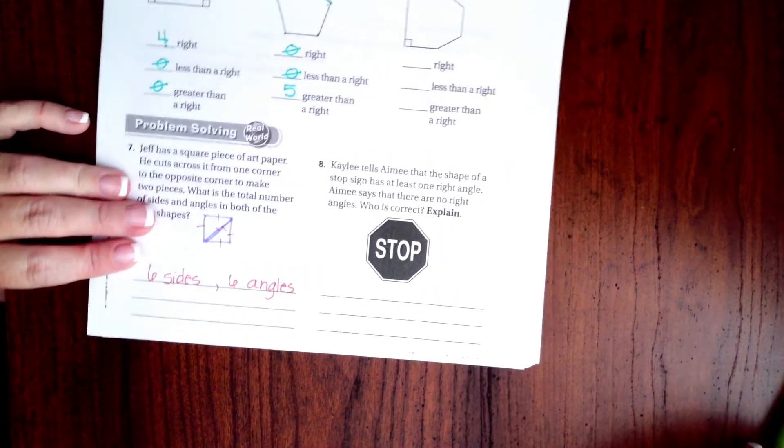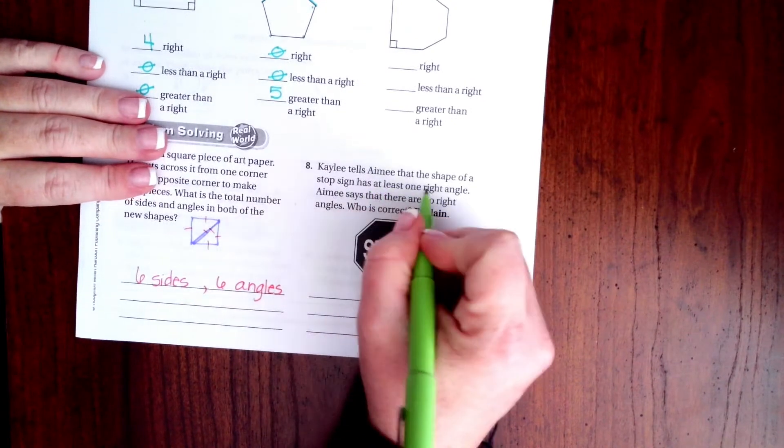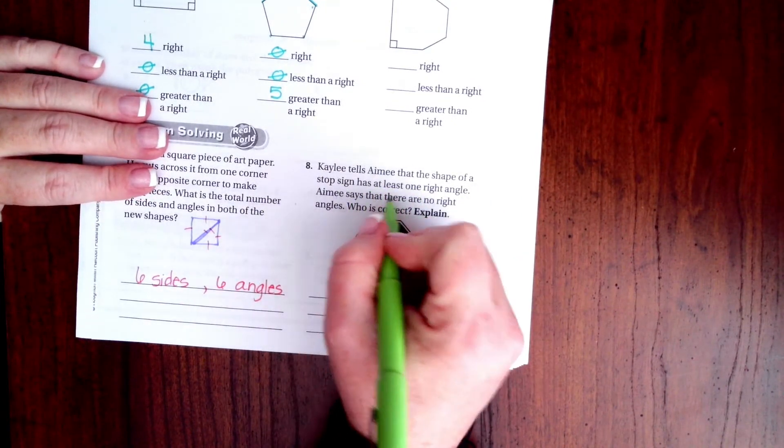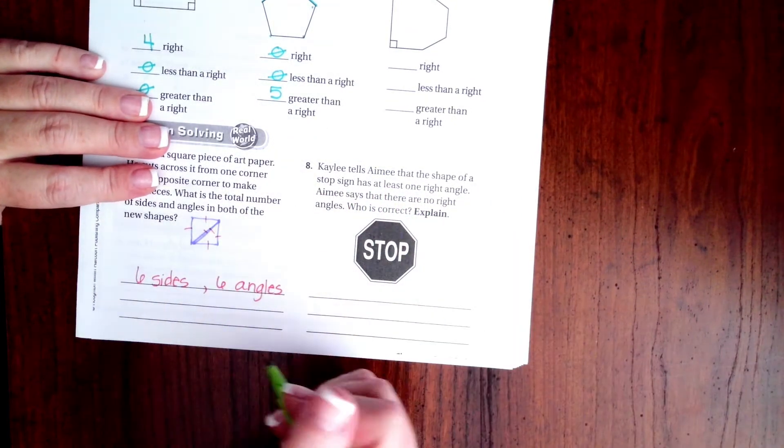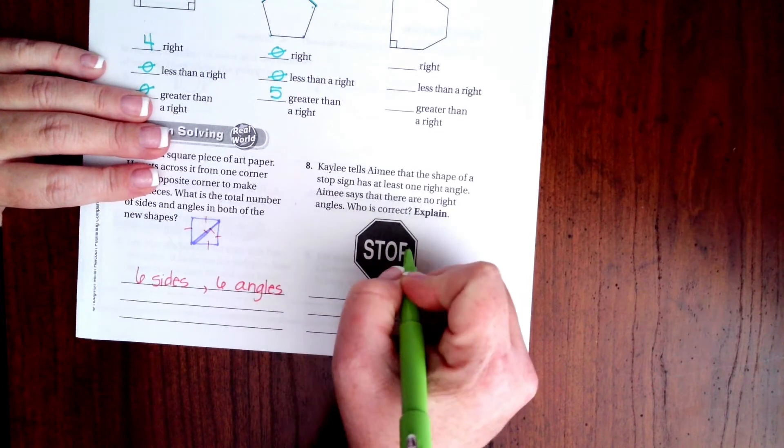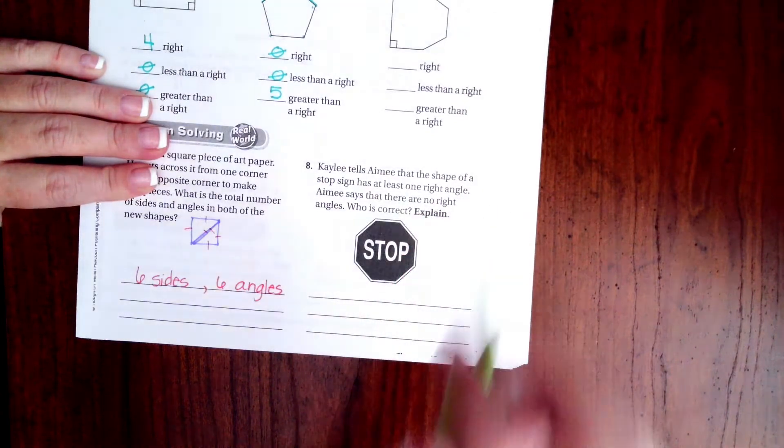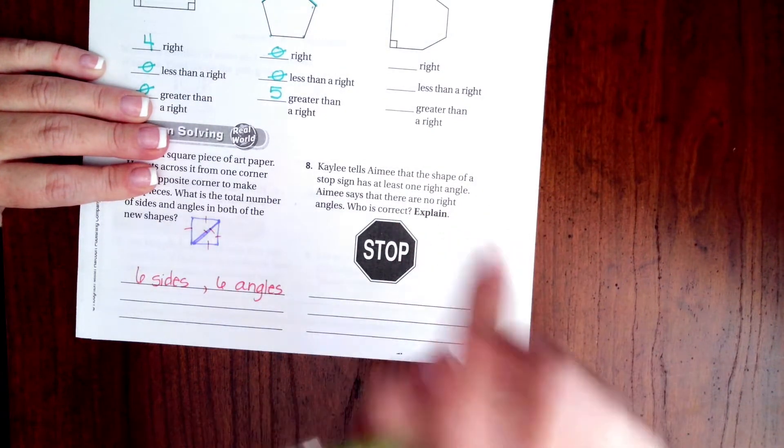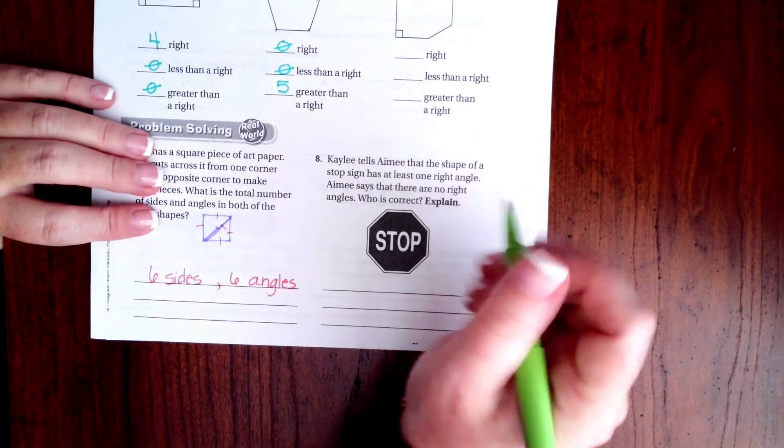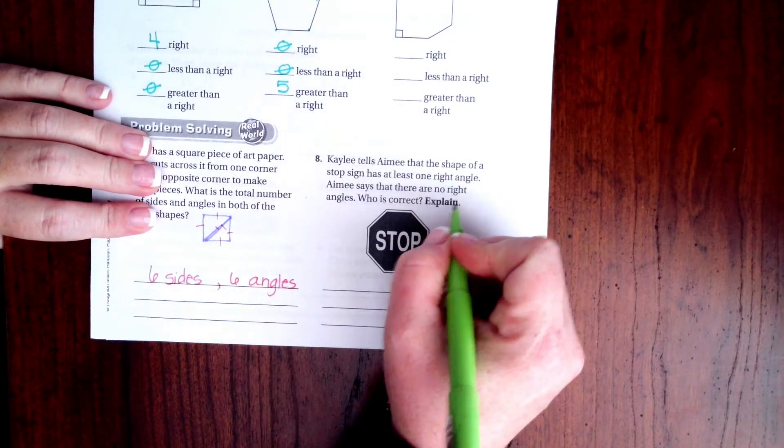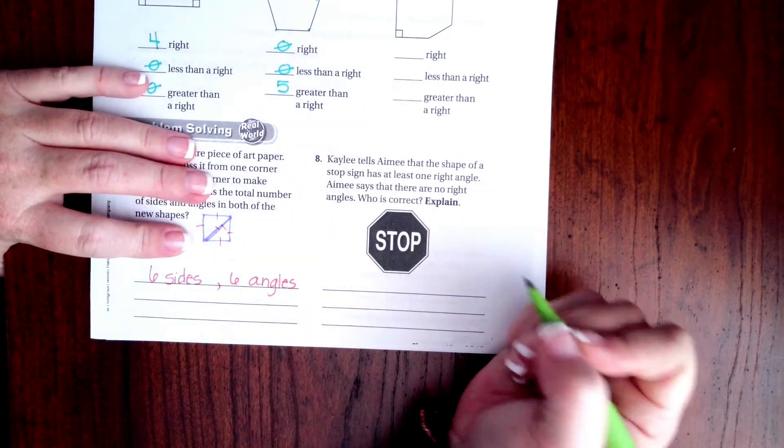Kaylee tells Amy that the shape of a stop sign has at least one right angle. I don't see any of these corners that are right at 90 degrees, right at a perfect squared angle. It says Amy says there are no right angles. Who is correct and explain?